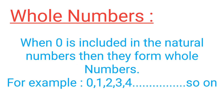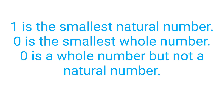Now come to whole numbers. When we include zero with natural numbers, they are called whole numbers. When zero is added to natural numbers, they become whole numbers: 0, 1, 2, 3, 4, 5, and so on. Remember: the smallest natural number is 1, the smallest whole number is 0. Zero is a whole number but not a natural number.